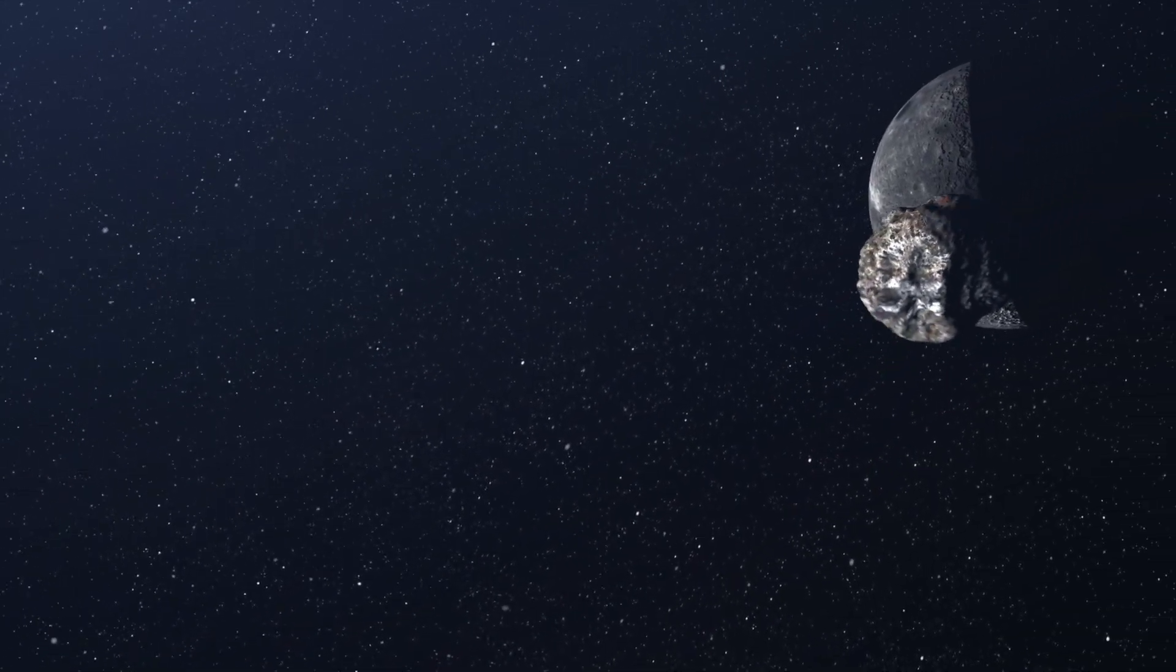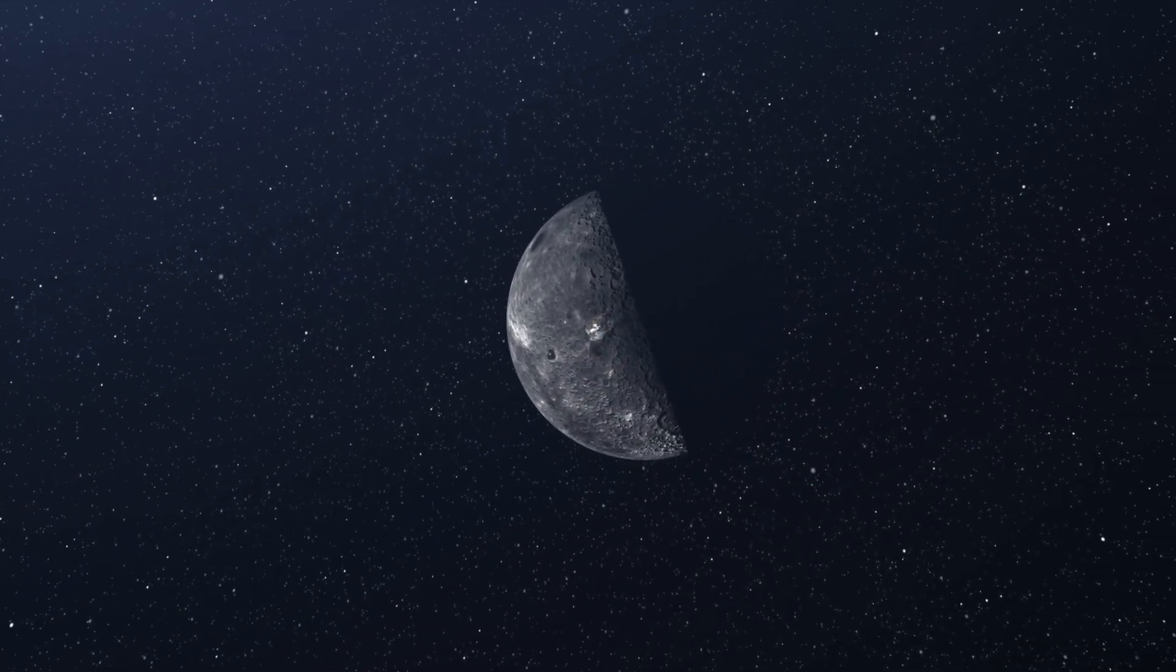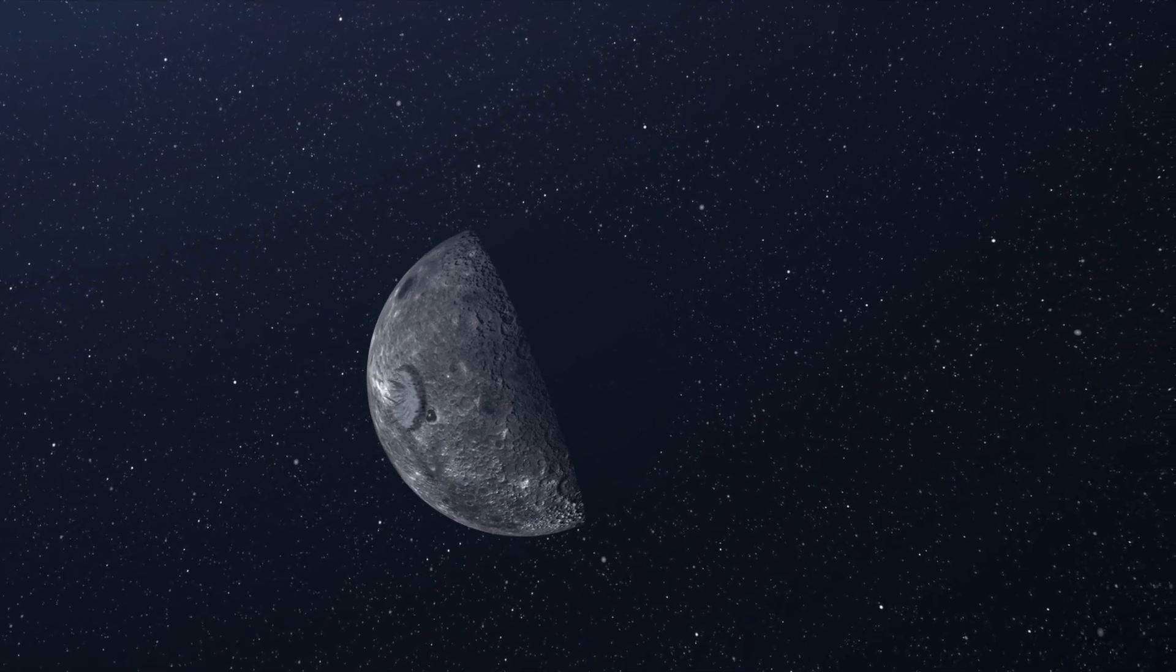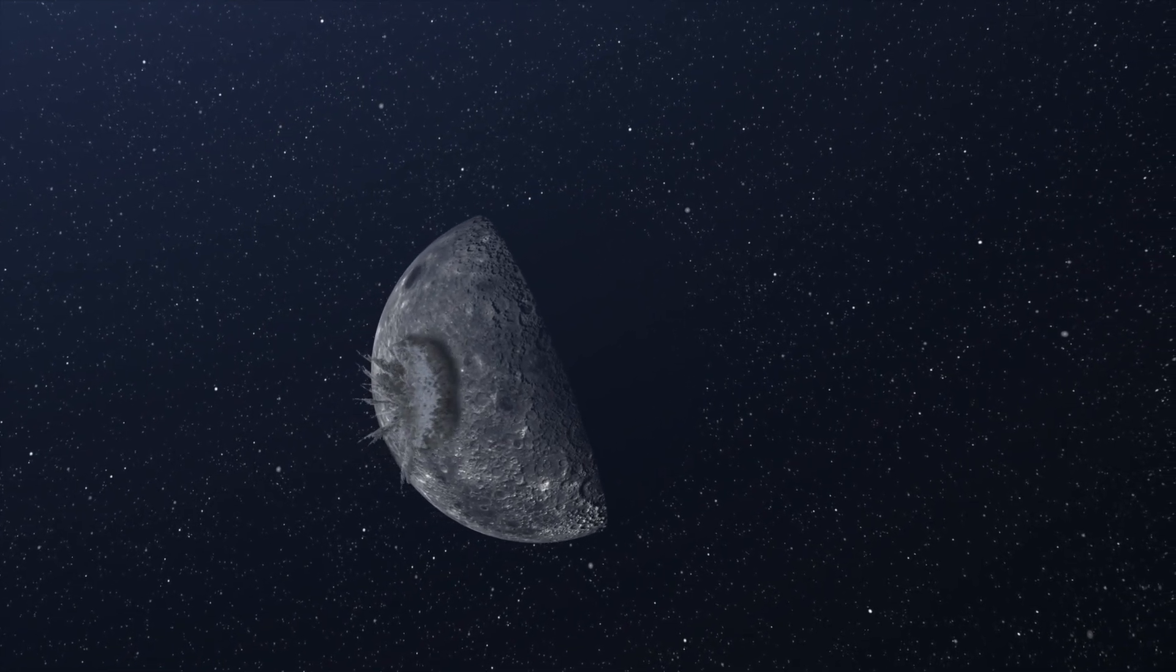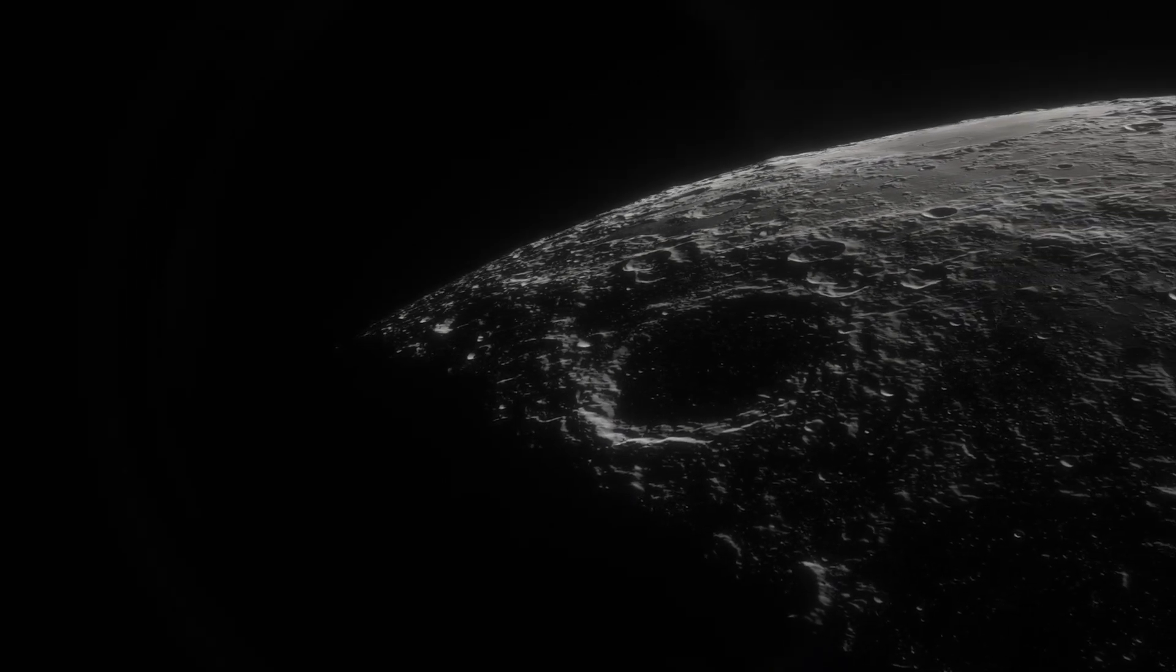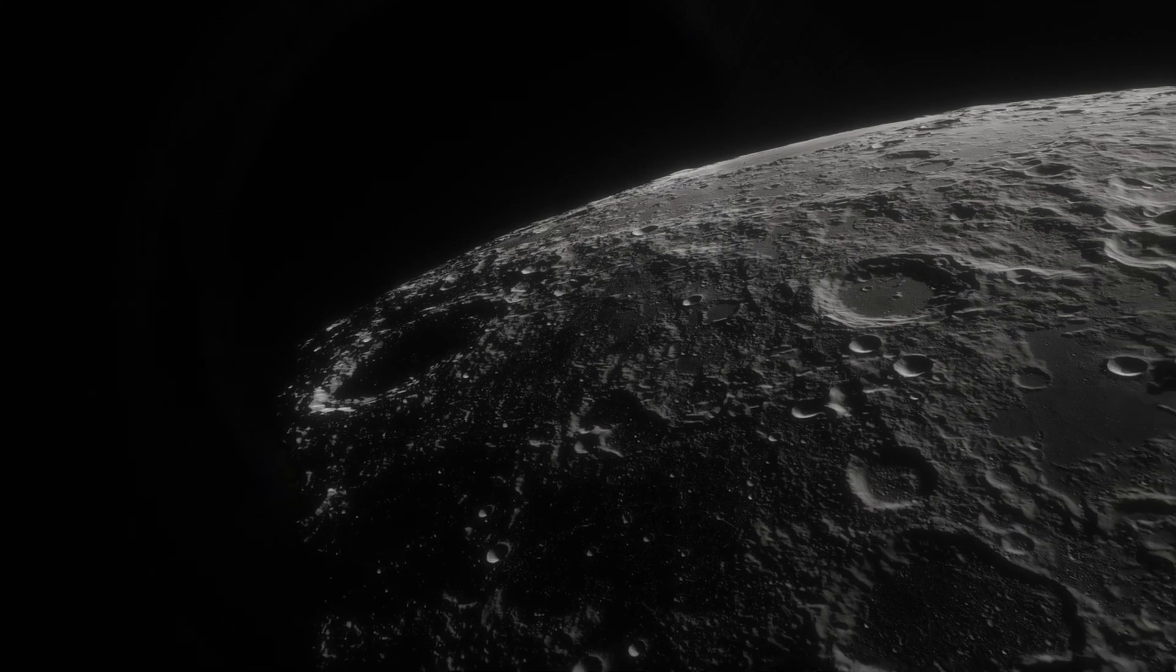Craters are round holes or dents in an object's surface. They were made when space rocks crashed into the moon a long time ago. When a space rock hits the surface, it makes a big explosion. Rock and dust go flying in every direction. Some craters are small, but others are huge, as wide as a city. You can even see some of the biggest craters from Earth with just your eyes.